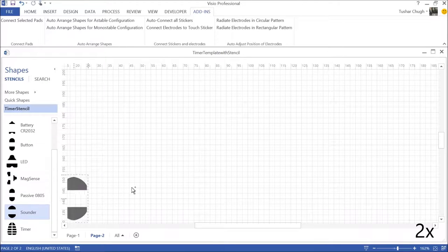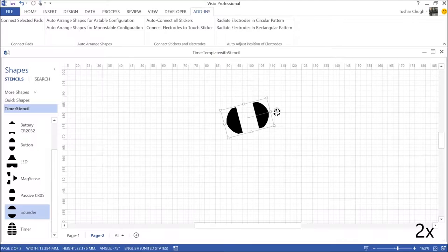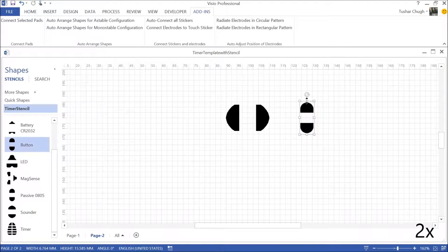Each prototype needs a custom-made conductive substrate and we have built extensions to the Visio drawing application to help with this. We use Visio stencils to represent the different stickers and drop the ones we need onto the canvas.